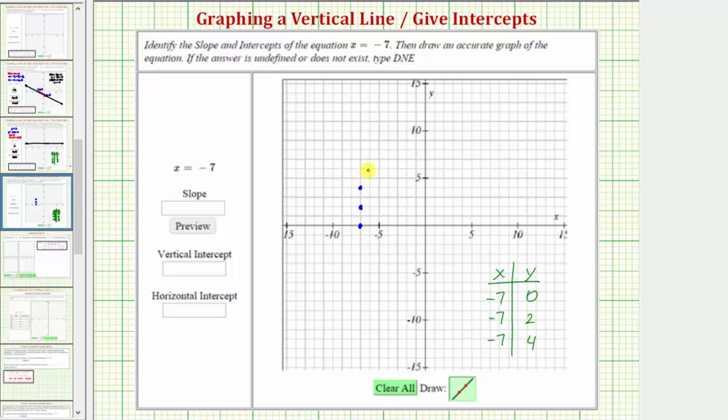Now it's quite clear that x equals negative seven is a vertical line. Notice how once we have the graph of the line, we know there is no vertical intercept because the line does not cross the vertical axis. The directions tell us to enter DNE if an answer does not exist, so we enter DNE for the vertical intercept.